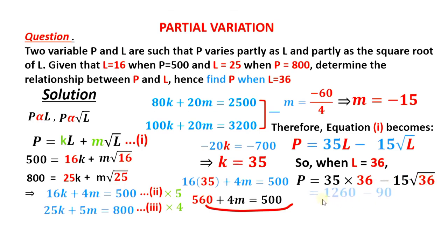So this simplifies to 1260, that is for 35 times 36, minus 15 times 6, root 36 is 6, and that is 90. And finally, we have our answer as 1170.